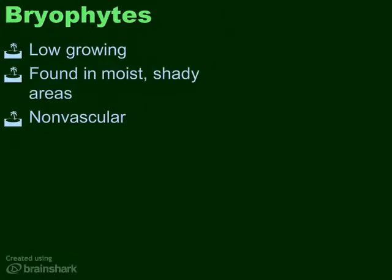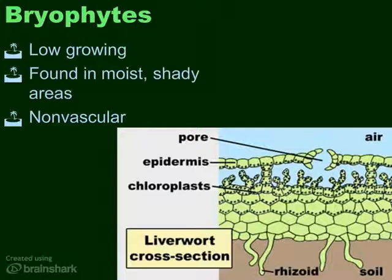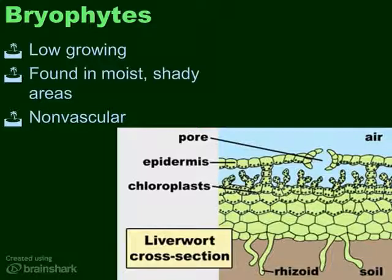Bryophytes are small, less than an inch high most of the time, and they take in water through specialized cells called rhizoids, which we see here at the bottom in this diagram. Rhizoids take up water and nutrients, so they act like roots, but they're not true roots. They're single cells or sometimes only two or three cells long, and they do not have vascular tissue — water moves around by osmosis. So rhizoids are kind of like a root, but not quite.